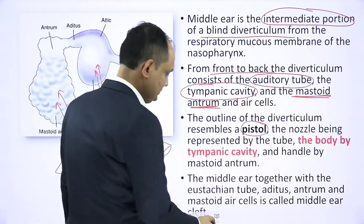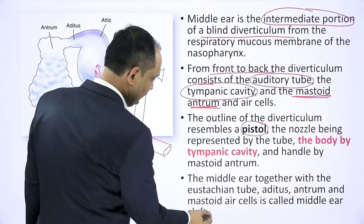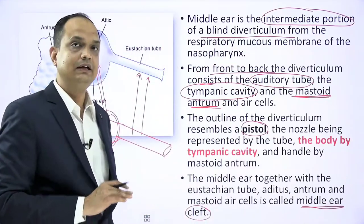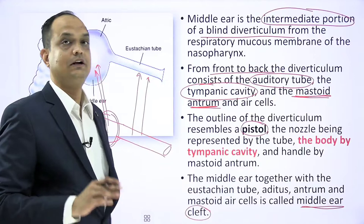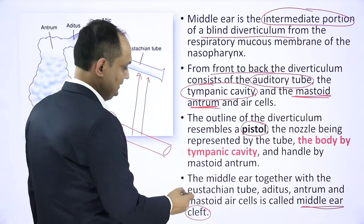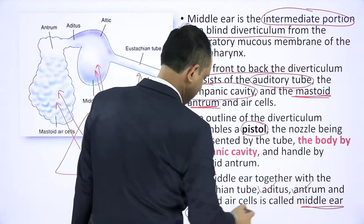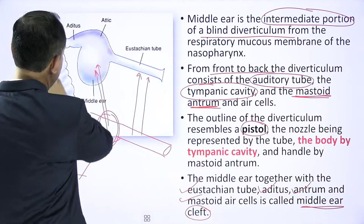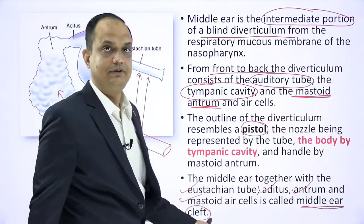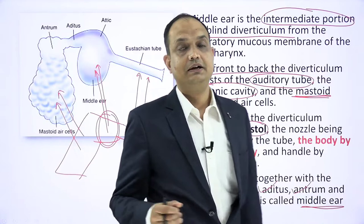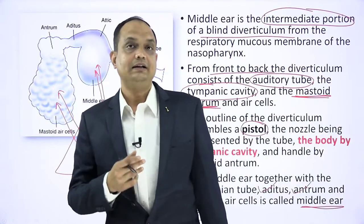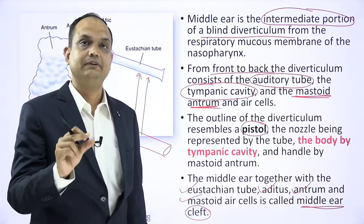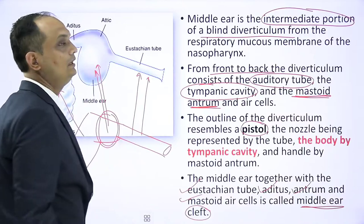All three together are referred to by the term 'middle ear cleft.' There are two different terms: middle ear cavity and middle ear cleft. The middle ear cleft includes all three — the Eustachian tube, aditus, antrum, and mastoid air cells together with the middle ear cavity. This entire area is known as the middle ear cleft and resembles the shape of a pistol. The middle ear cavity is just one part of this middle ear cleft.